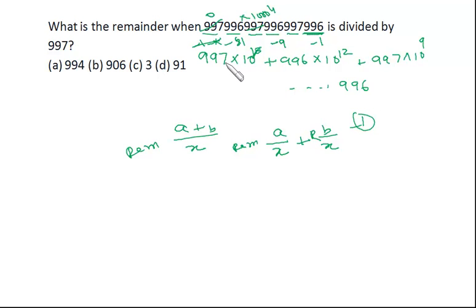Now as I've already discussed, we have to add up all the remainders. So minus 81 minus 9 is minus 90 and minus 1, so minus 91 is the remainder if this expression is divided by 997. But we want the remainder to be positive, so we'll deduct this 91 from 997, so we'll be getting 906 as the remainder.